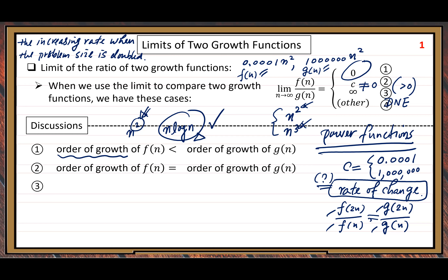Case number three: the ratio approaches infinity. That means we just switch the two cases — put n³ at the numerator and n² at the denominator. It's just the opposite of case number one. That means the order of growth of f(n) is greater than the order of growth of g(n).